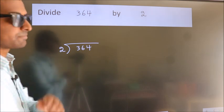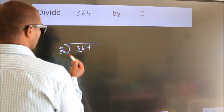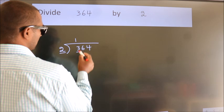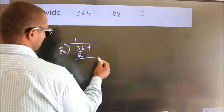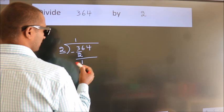Next, here we have 3. Here 2. A number close to 3 in 2 table is 2 times 1 is 2. Now we should subtract. We get 1.